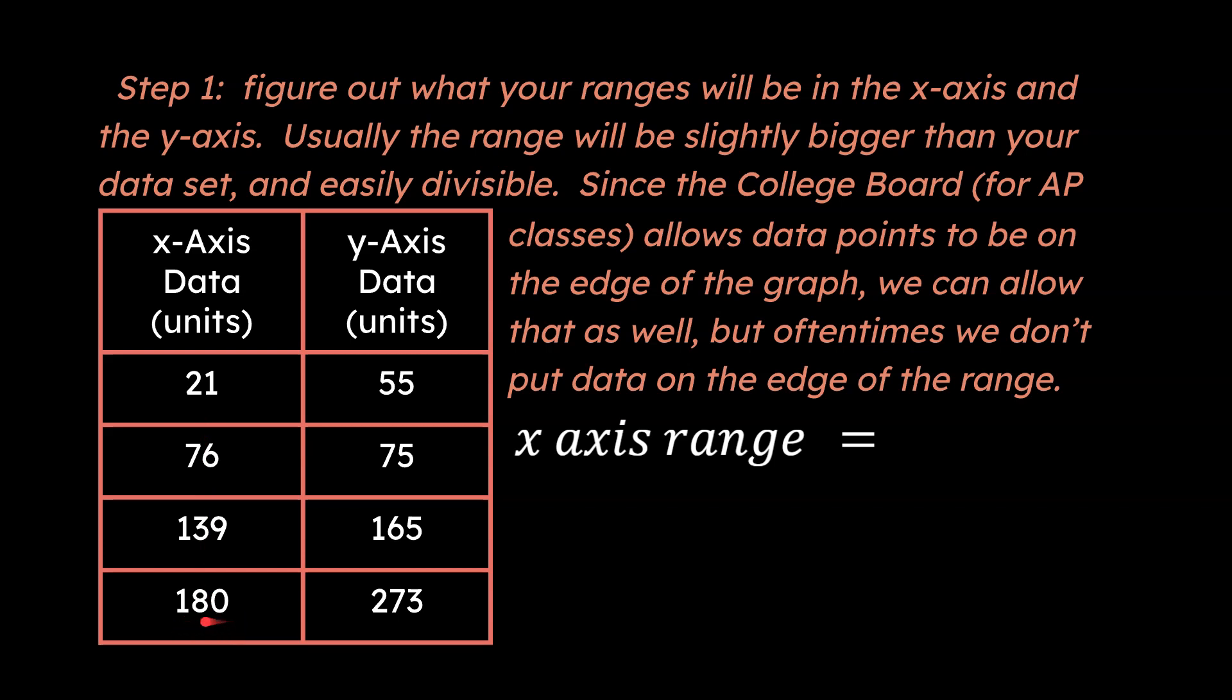I used to say that you have to go over the value but it turns out that the College Board for physics will accept it if you put a data point right on the edge of your graph. So I've come to accept that as well. So let me show you what I'm talking about. What do you think we could write for our X axis range that would be useful here? Take a stab at it.